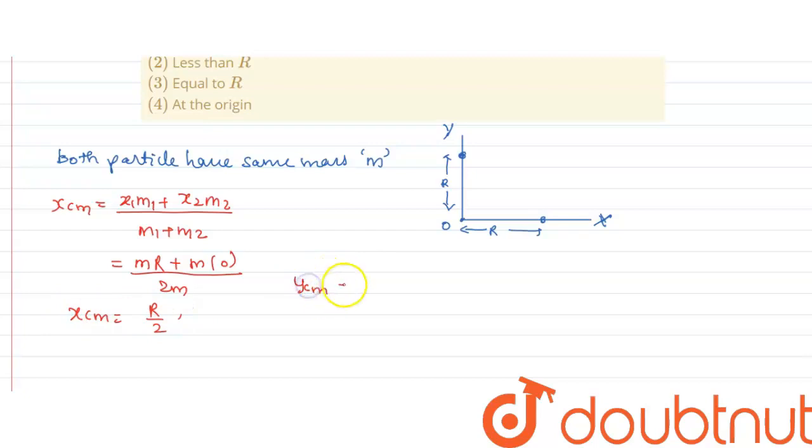Now, calculating y center of mass, it will be y₁m₁ plus y₂m₂, upon m₁ plus m₂. So, the coordinate of y₁ for mass m₁ is 0 into M, plus y₂ will be R into M, upon 2M, which is equal to R by 2.